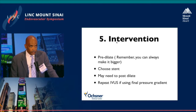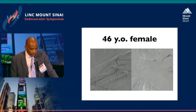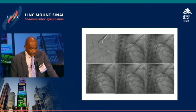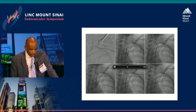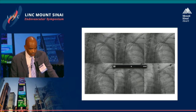I always choose to pre-dilate. Remember, you don't have to be one-to-one with your pre-dilatation — you can always make it bigger, you can't make it smaller. You choose your stent appropriately and may need to post-dilate. If you're using IVUS, you can use it for follow-up and to measure pressure gradients. This image shows a patient with diffuse proximal subclavian stenosis. On the upper left panel, you see a reference object used for quantitative angiography, followed by balloon dilatation, stent placement, stent deployment, and if needed, upsizing with a larger balloon. The final angiography is shown on the lower right panel.